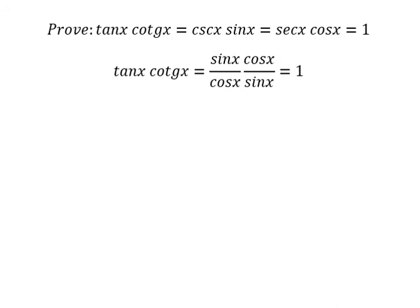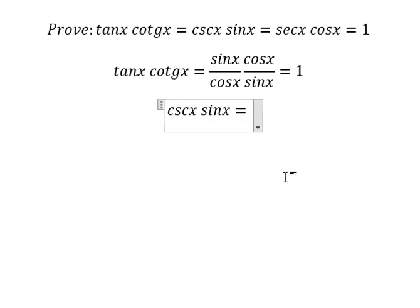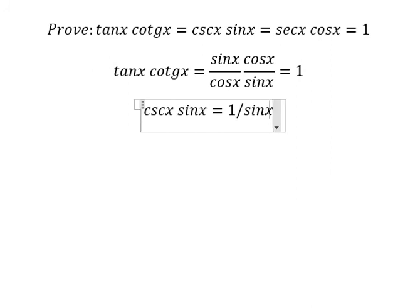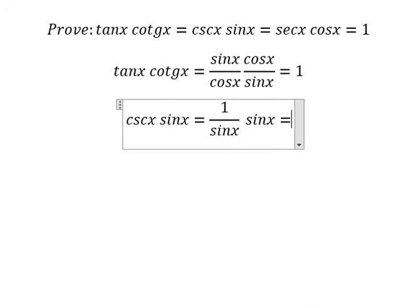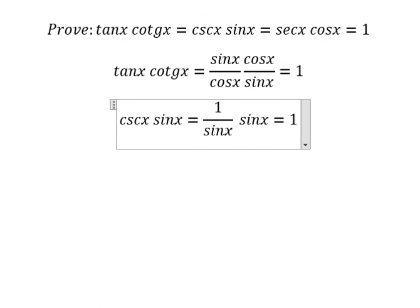Next: cosecant(s) multiplied by sine(s). We know that cosecant(s) is one over sine(s), multiplied by sine(s). Sine(s) divided by sine(s) gives us one.